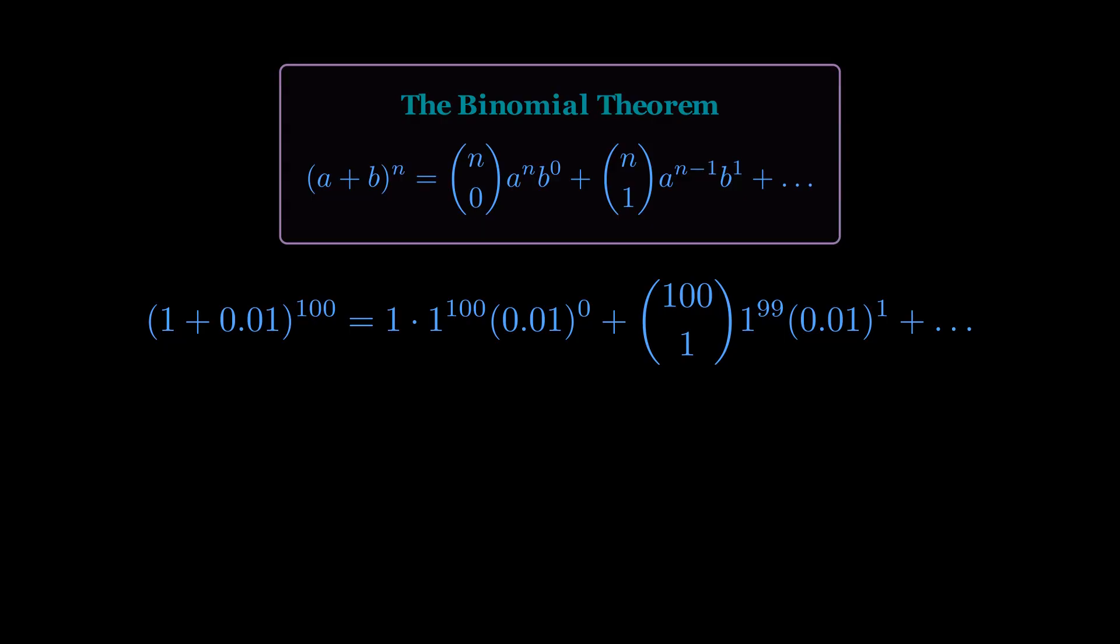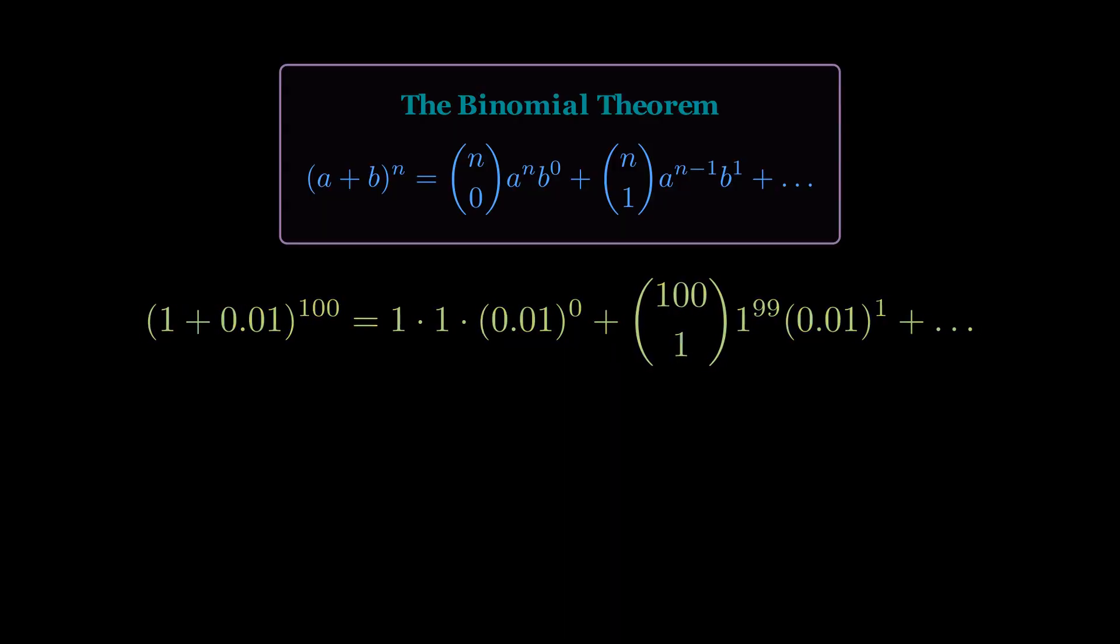Next, we have 1 to the power of 100. 1 multiplied by itself any number of times is still just 1. That simplifies to 1 as well. Finally, we look at 0.01 to the power of 0. Any number raised to the power of 0 is 1.